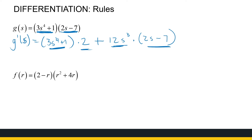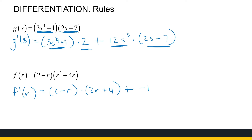Next, I've got a function f(r). The derivative is: the first one, (2 minus r), times the derivative of the second — the derivative of r squared plus 4r is (2r plus 4) — plus the derivative of the first, which is minus 1 (brackets needed; you can't have a plus and minus next to each other), times the second, r squared plus 4r. This can be simplified, but I'm just showing you how to apply the product rule.